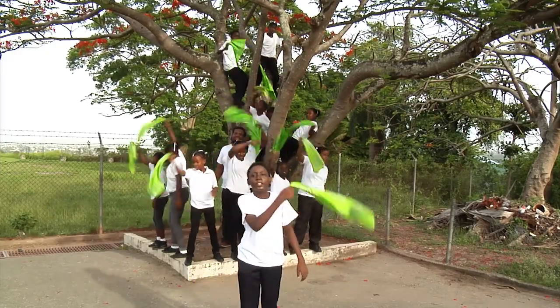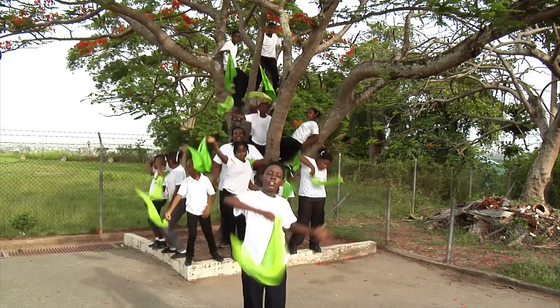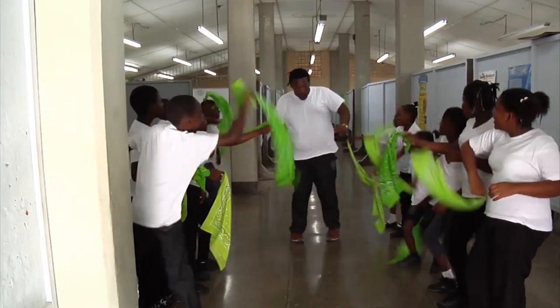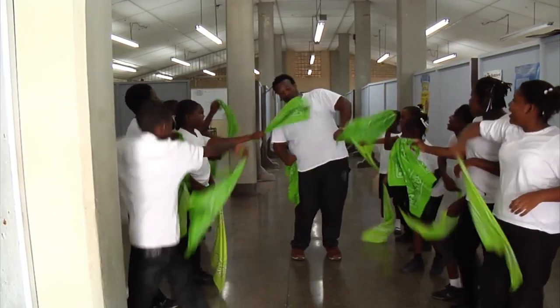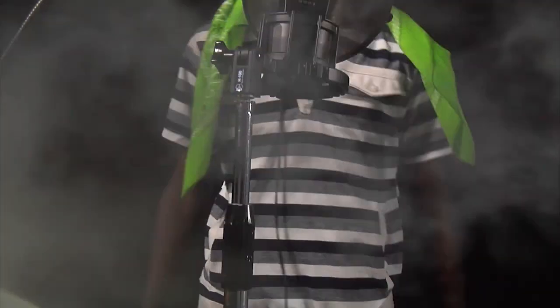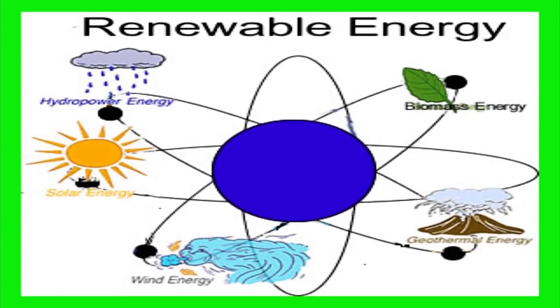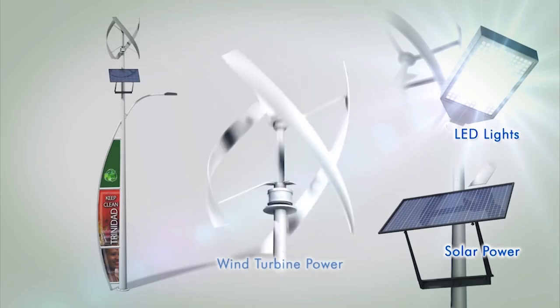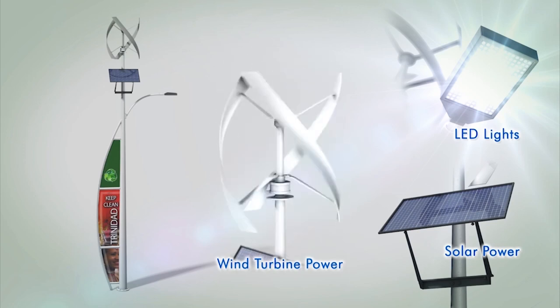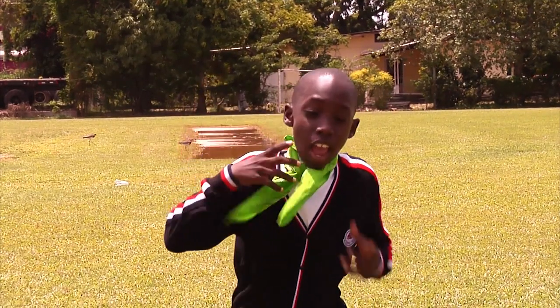Go green, everybody go green. How can we go green? By using renewable energy. We're going green in the Western East. Sunlight, solar and wind energies — come on, people, get it stuck in your head.